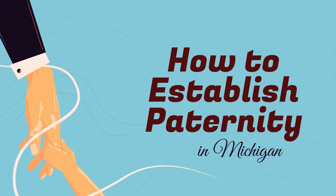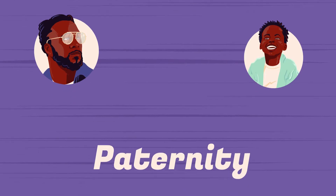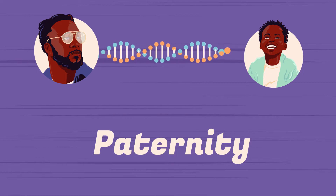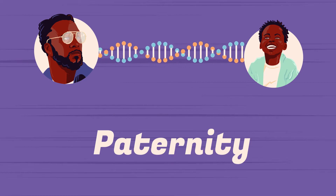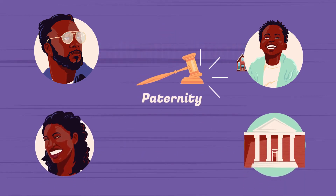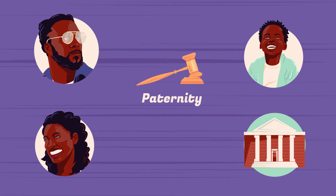How to Establish Paternity. Paternity is a legalese word for being the biological or legal father of a child. Establishing paternity is very important because it allows for there to be a custody and parenting time order for that parent. It creates an obligation to pay, or the right to receive, child support, among other reasons that are important to your child.